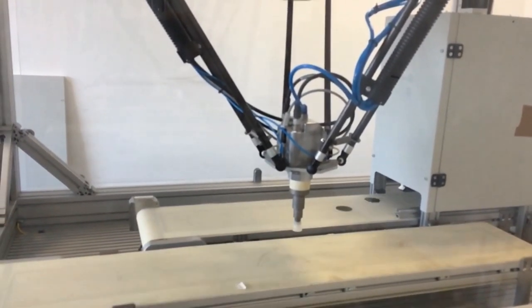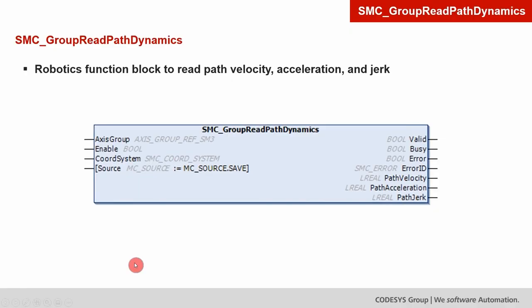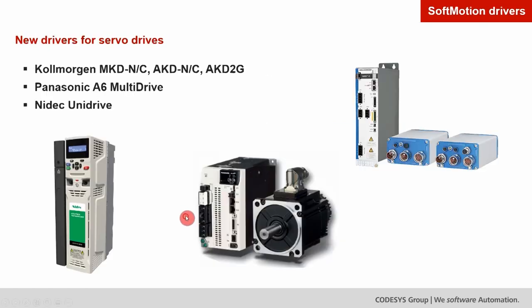Next, we have the SMC Group Read Path Dynamics function block from the robotics part. Relative to the coordinate system you specify, it calculates the path velocity, acceleration, and jerk of the axis group entered as input. Then we have new drivers for servo drives via EtherCAT: a call Morgan for the Panasonic A6 and for the NIDEC — new drivers with native support. For the complete list of all supported drives, please visit our homepage in the product section.